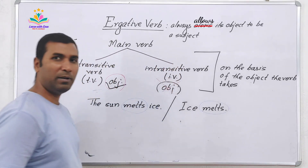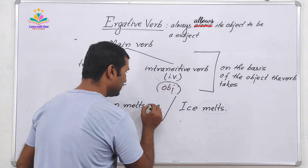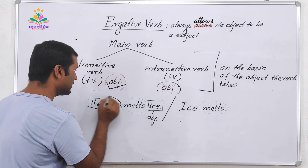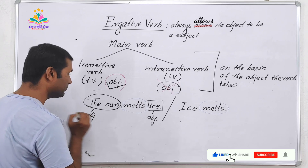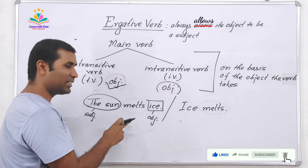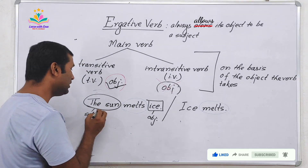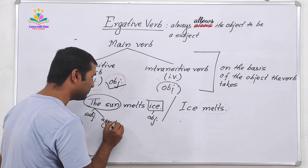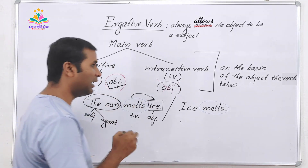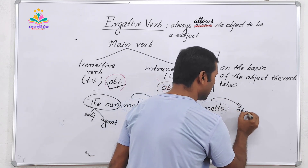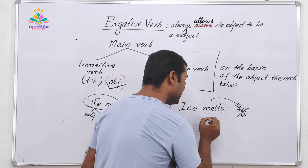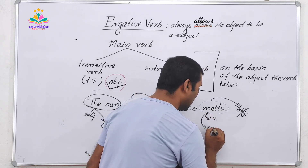Here, 'ice' is an object and 'sun' is the subject. Ice is here melting — it is all because of the sun. So sun has functioned as an agent. And 'melts' is a transitive verb because this object is here. Now, 'Ice melts' — this doesn't have an object. This is an intransitive verb and it is also an ergative verb.